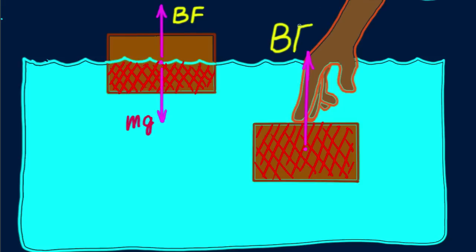Buoyant force, Bf, on the submerged block is greater. Why? Because the water it displaces equals its entire volume. So, it's held in place by hand with a force F.